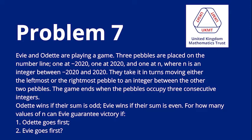where n is an integer between negative 2020 and 2020. They take it in turns moving either the leftmost or the rightmost pebble to an integer between the other two pebbles. The game ends when the pebbles occupy three consecutive integers. Odette wins if their sum is odd, Evie wins if their sum is even. For how many values of n can Evie guarantee victory if one, Odette goes first, and two, Evie goes first?